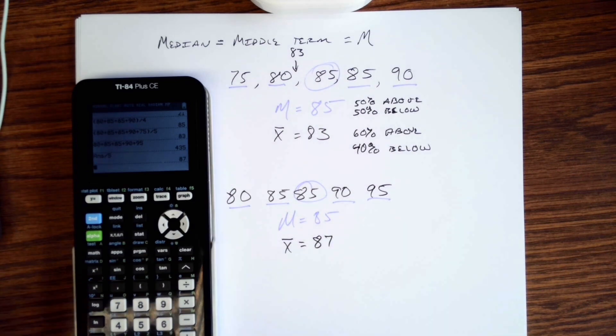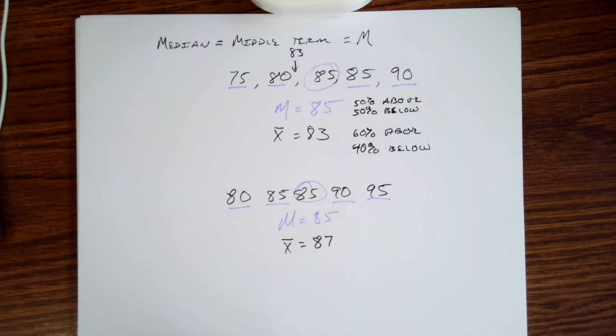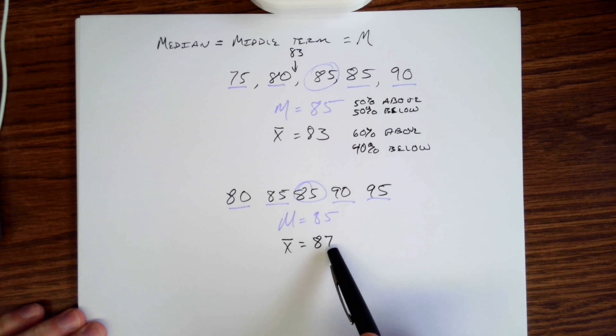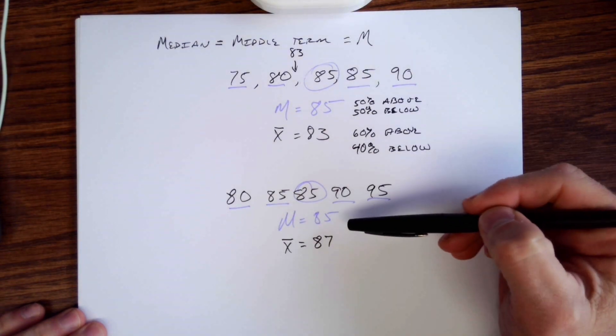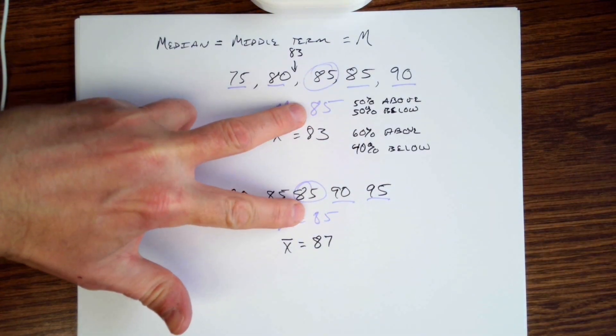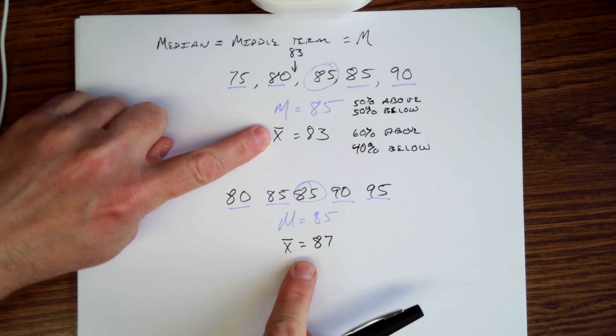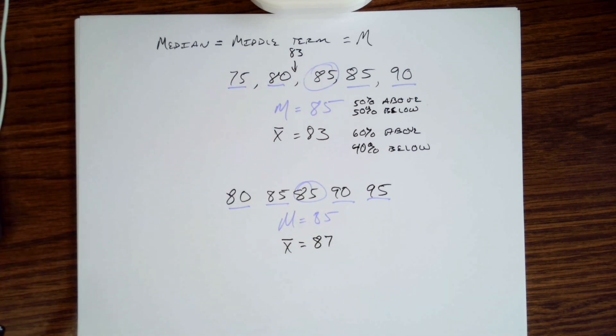Well in that particular instance, X bar is the higher grade. But in both these situations, two different data sets, two different data sets have the exact same median with different averages. Then we could construct a data set with the same average and different medians—that'd be a whole other one for us to look at.